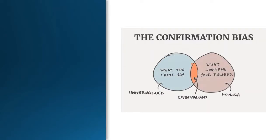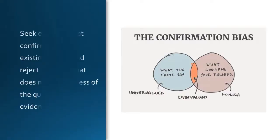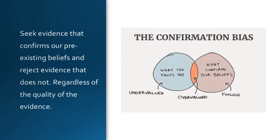The first cognitive bias we will be discussing is confirmation bias. This bias refers to the tendency to search for, interpret, and remember information in a way that confirms our pre-existing beliefs or hypothesis. For example, if someone believes that climate change is not real, they may only seek out information that supports that belief and ignore information that contradicts it. Confirmation bias can lead to the reinforcement of false beliefs and can prevent people from considering alternative viewpoints.